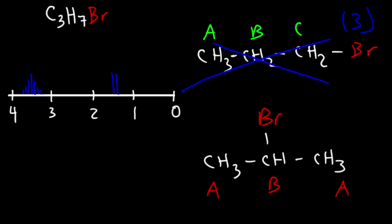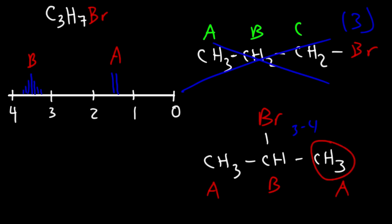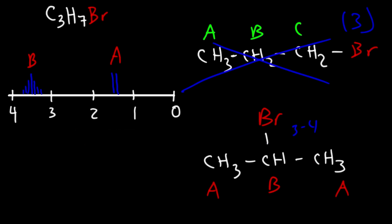We have exactly two signals, which matches the spectrum. Looking at the chemical shift, the CH next to a bromine atom typically appears around 3 to 4 ppm, so that must be signal B. Signal A is the methyl group, which typically appears around 1 ppm, but since it's one carbon away from the carbon bearing bromine, it will be shifted slightly downfield.